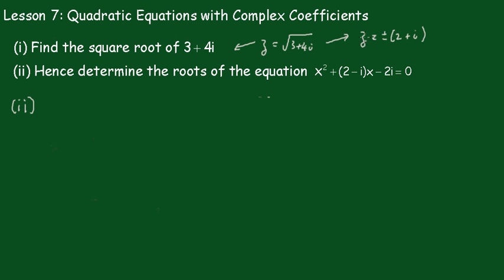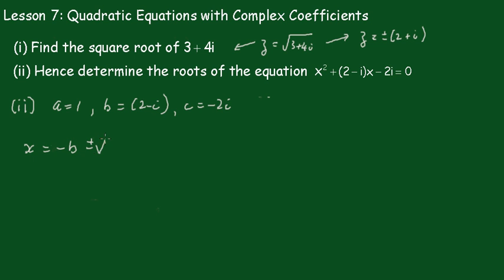The solutions from Part 1 are z equals plus or minus (2 plus i). Writing down the coefficients: a equals 1, b equals 2 minus i, and c equals minus 2i. The quadratic formula gives x equals minus b plus or minus the square root of b squared minus 4ac, all over 2a.